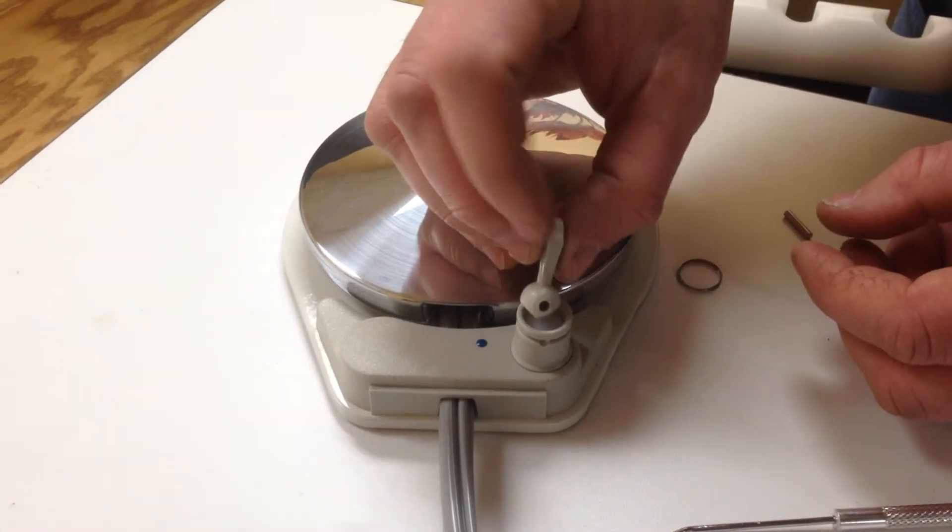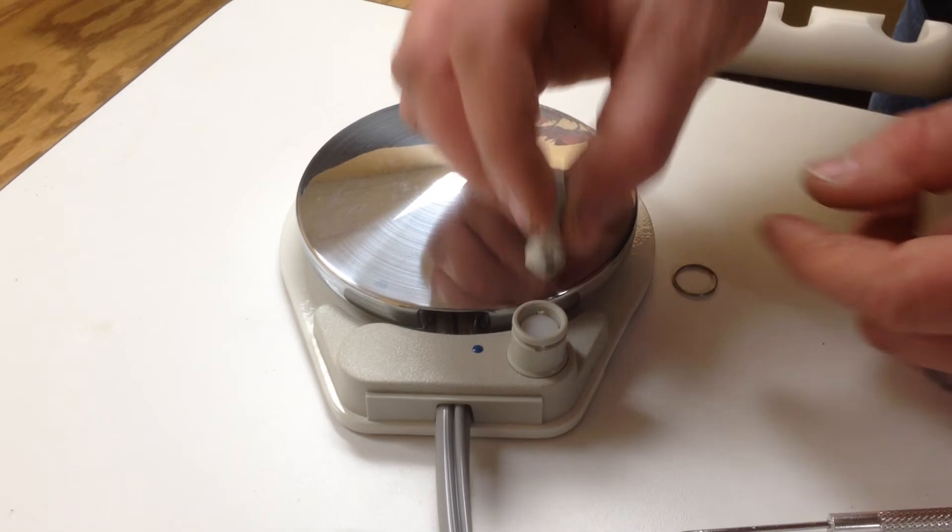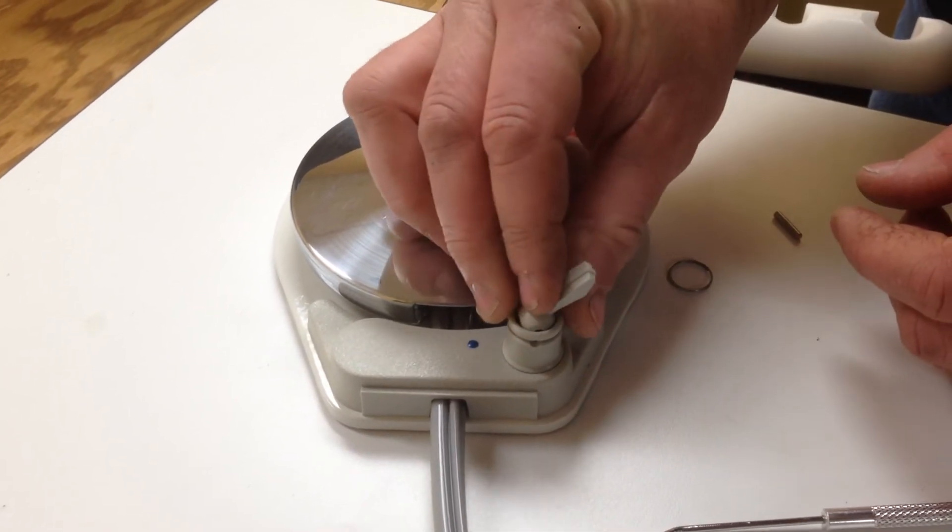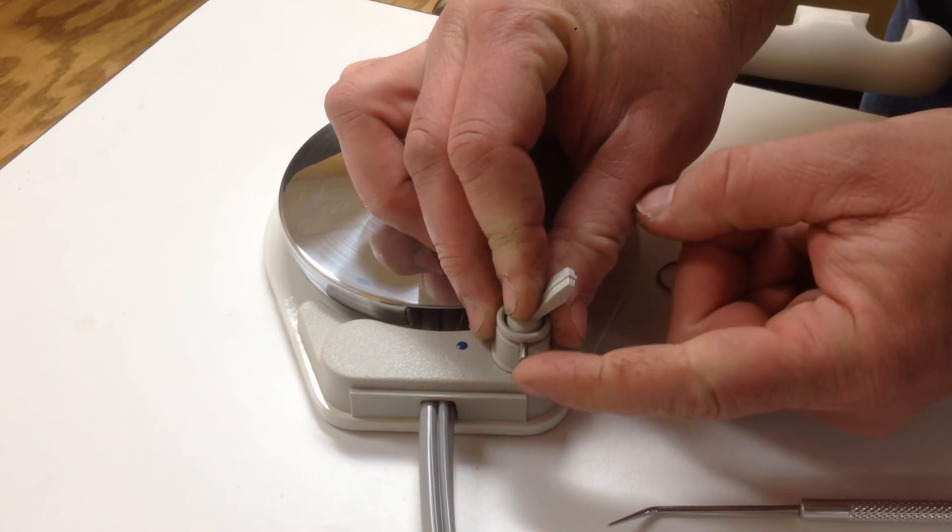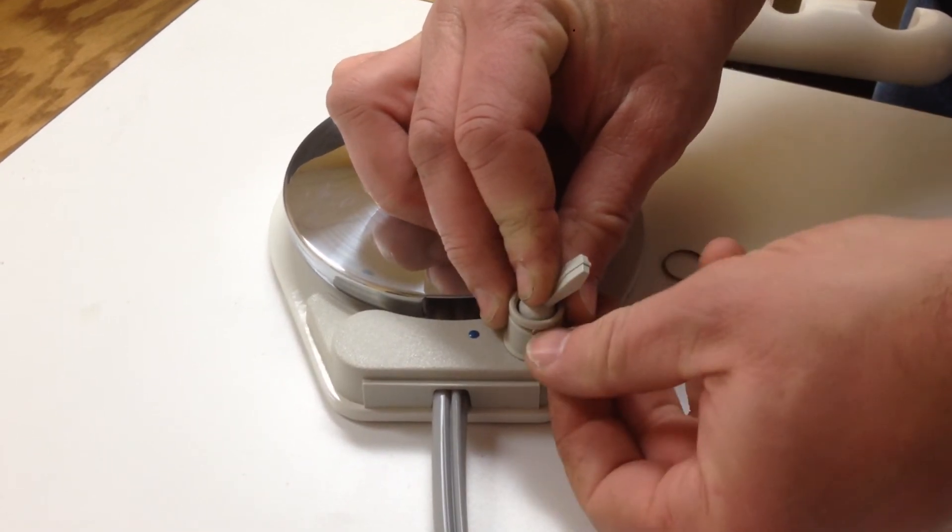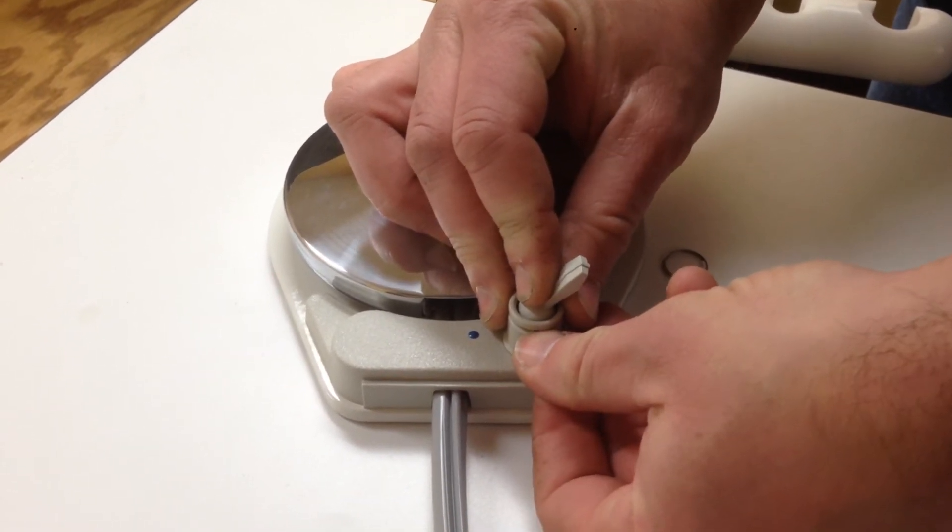To put it back in, just put it in to where the larger flat side is facing so the toggle fits away. Push the pin back in like so, get it flush inside there.